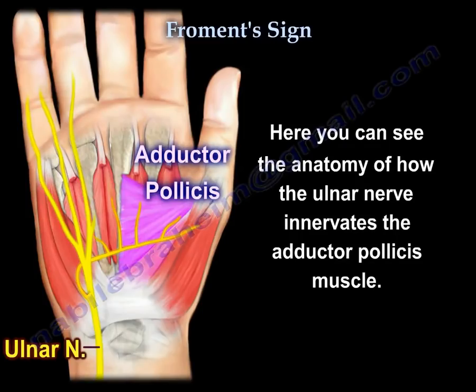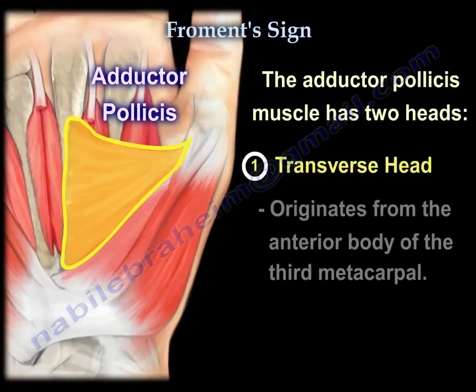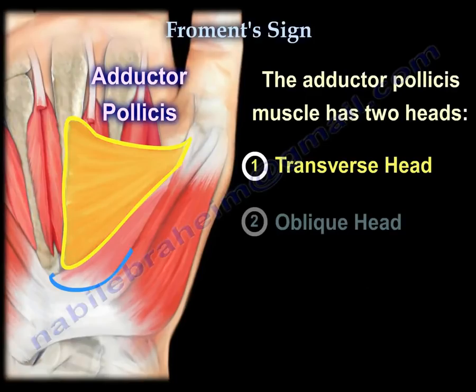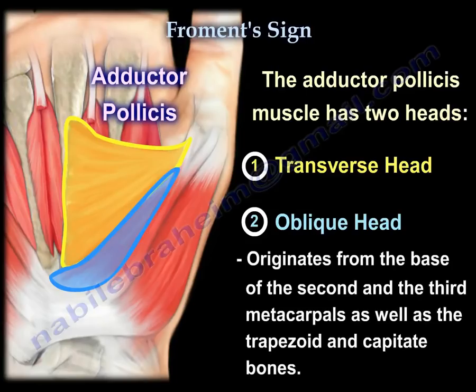Here you can see the anatomy: the ulnar nerve and adductor pollicis muscle, and how the ulnar nerve innervates the adductor pollicis muscle. The adductor pollicis muscle has two heads: a transverse head originating from the anterior body of the third metacarpal, and an oblique head originating from the base of the second and third metacarpals, as well as the trapezoid and capitate bones.